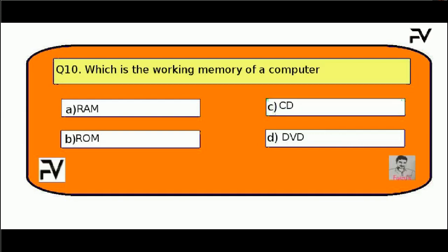Last question. Which is the working memory of a computer? Option A, RAM; Option B, ROM; Option C, CD; Option D, DVD. The correct answer is Option A, RAM.